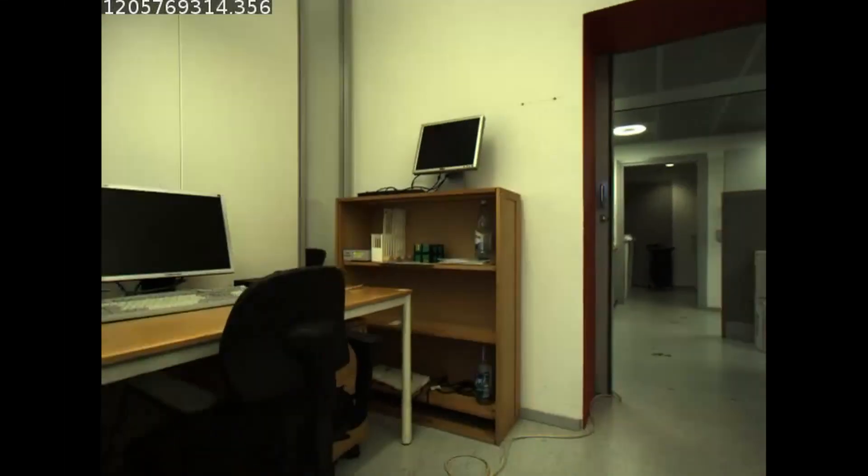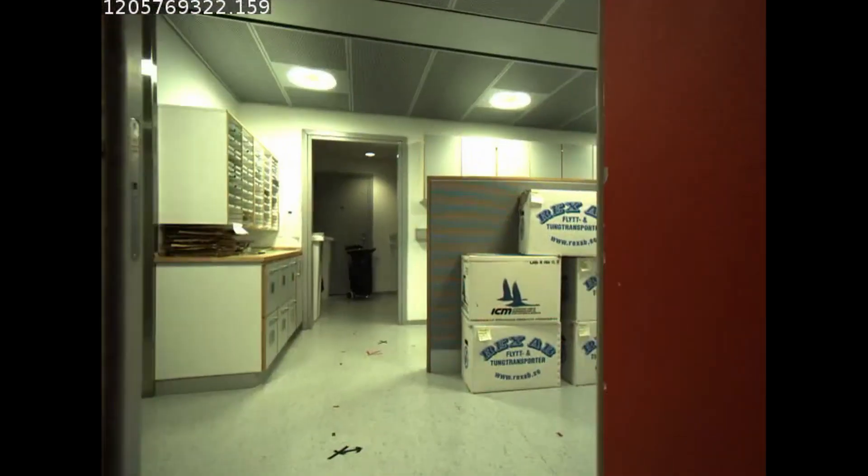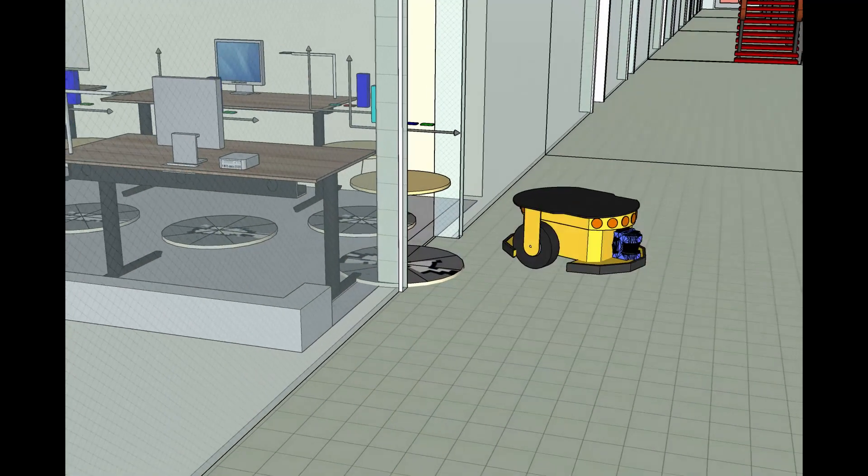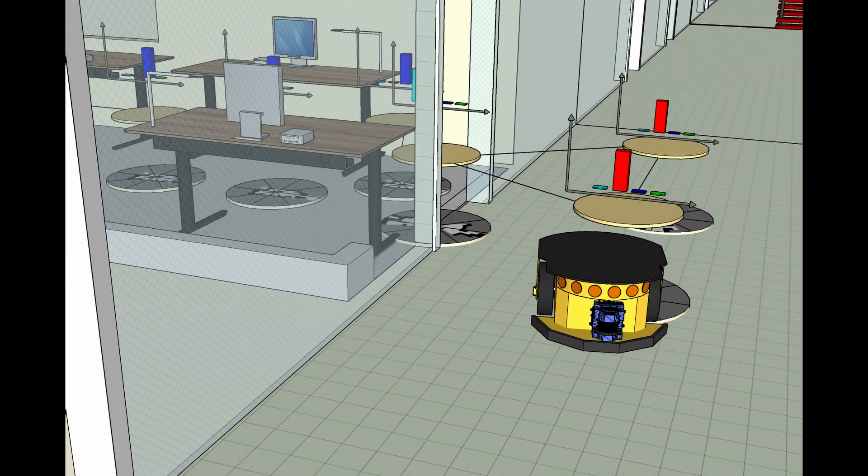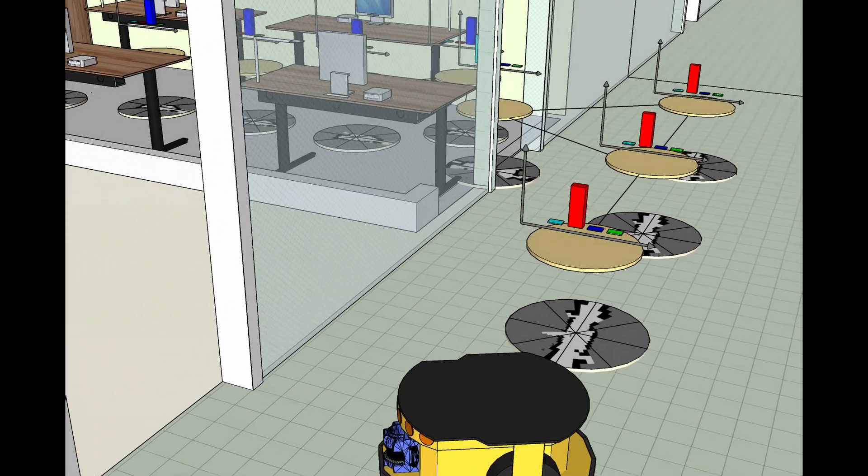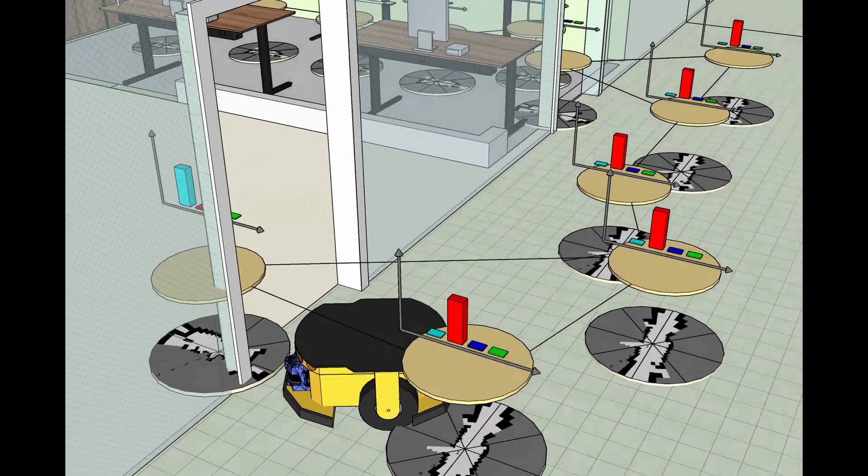We learn the network in semantically annotated training environments. As the robot explores each environment, it integrates laser-range data into local maps representing the geometry of each place. A topological graph relating the places is expanded as the robot moves around.